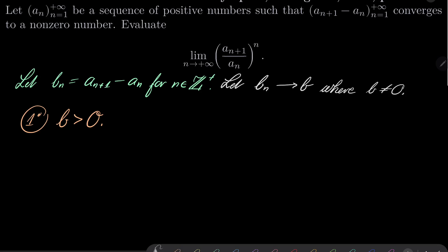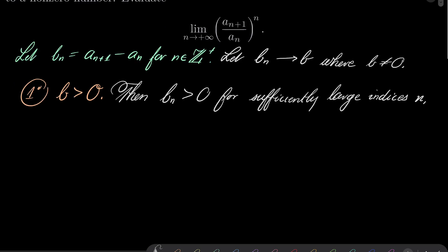Now, that means that then, for sure, for sufficiently large indices n, b_n is also going to be greater than zero for sufficiently large indices n. What now? Notice that then, that implies in turn that a_{n+1}, which can be written as a_n plus b_n, well, notice that this,